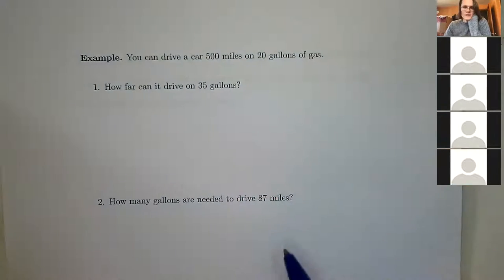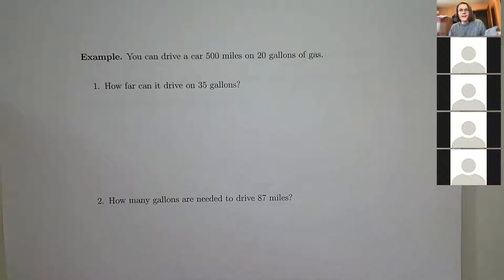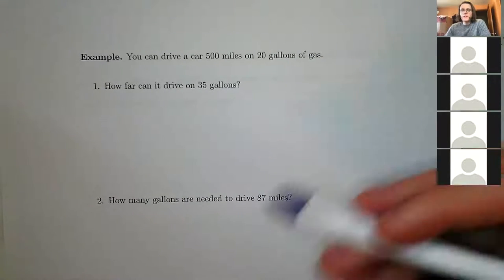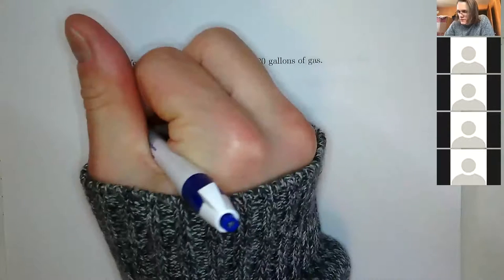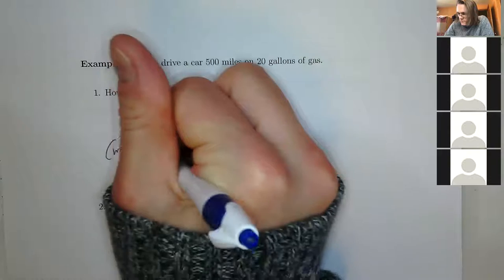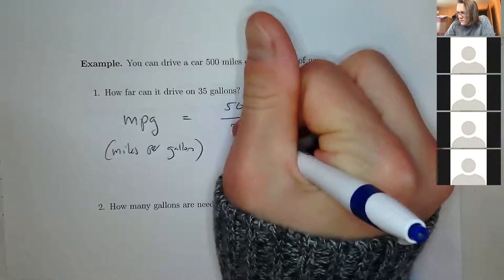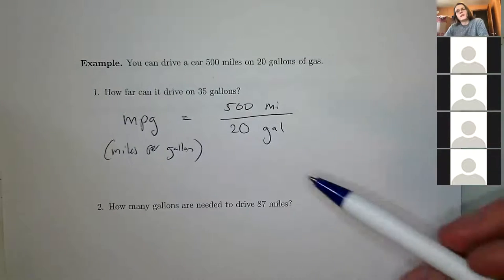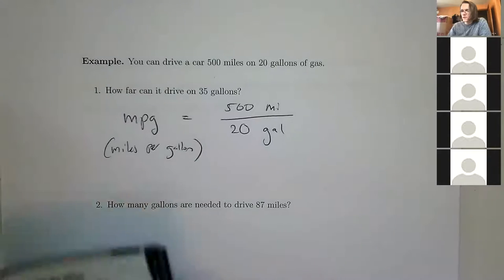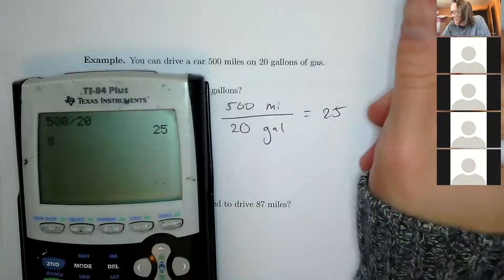Now: you can drive a car 500 miles on 20 gallons of gas. How far can it drive on 35 gallons? Find the miles per gallon and multiply by 35. The MPG is 500 miles over 20 gallons — 500 ÷ 20 = 25 miles per gallon. Then 25 miles/gallon × 35 gallons = 875 miles.